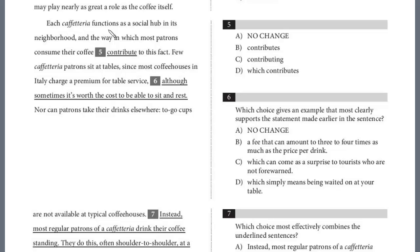Each caffetteria functions as a social hub in its neighborhood, and the way in which most patrons consume their coffee contribute to this fact. This looks like subject-verb agreement. The way in which most patrons consume their coffee contribute. So, what contributes to the fact? You should recognize here, it's not the patrons, right? It's the way in which is a prepositional phrase, and these don't count in determining the subject. And so, the subject is way, the way in which most patrons consume their coffee contributes, because it's singular. And so, we have to add an S here to be an agreement, and the answer is B.